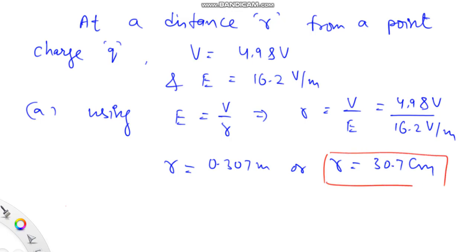In the second part of the problem, we have to find that point charge. Using the expression for potential, V equals 1 upon 4πε₀ times q by r, so q will be given by V multiplied by 4πε₀ times r.